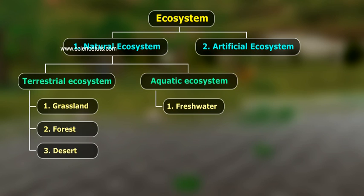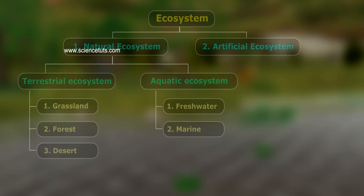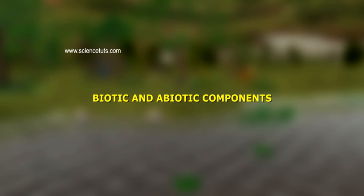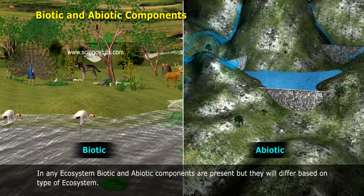The two types of aquatic ecosystem are: Freshwater Ecosystem and Marine Ecosystem. Biotic and Abiotic Components — in any ecosystem,